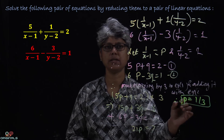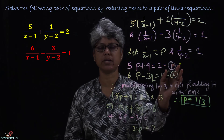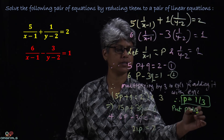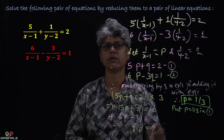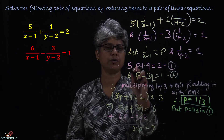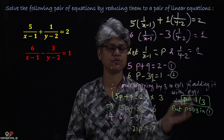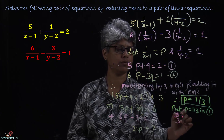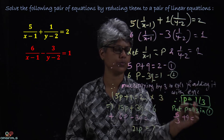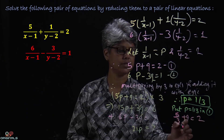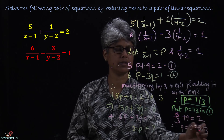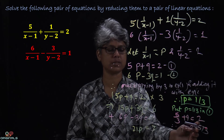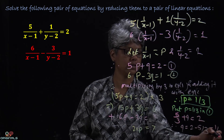So putting P equal to 1/3 in equation 1: 5 into 1/3 gives 5/3, plus Q equal to 2. Therefore Q = 2 minus 5/3. Taking LCM as 3: that gives 6/3 minus 5/3, which equals 1/3. So Q is also equal to 1/3. So both P and Q equal 1/3, but we need to find X and Y.